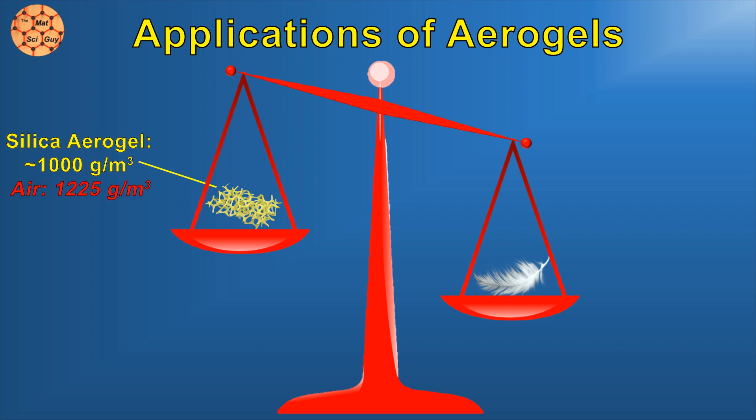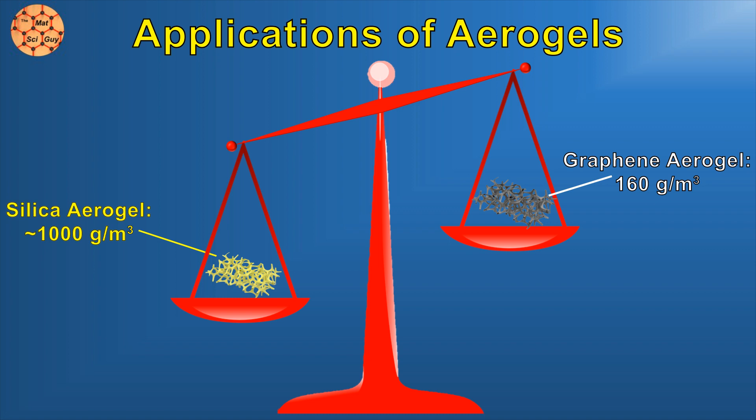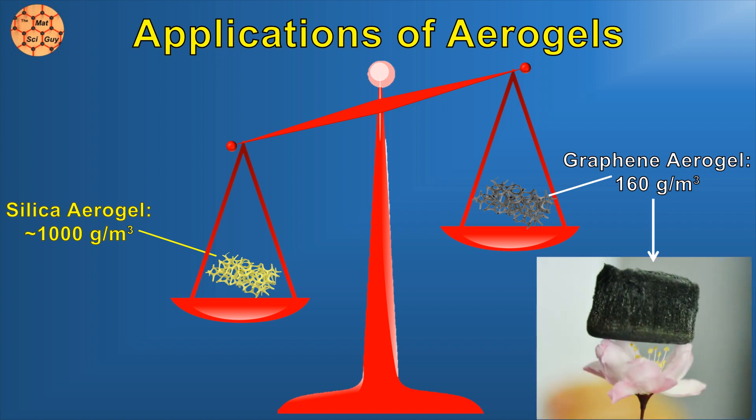Recently, a graphene aerogel took this a step further, at a truly unfathomable 160 grams per meter cubed. Here it is comfortably sitting over a flower. I promise this isn't turning into a botany channel. I guess flowers and aerogels just work together.